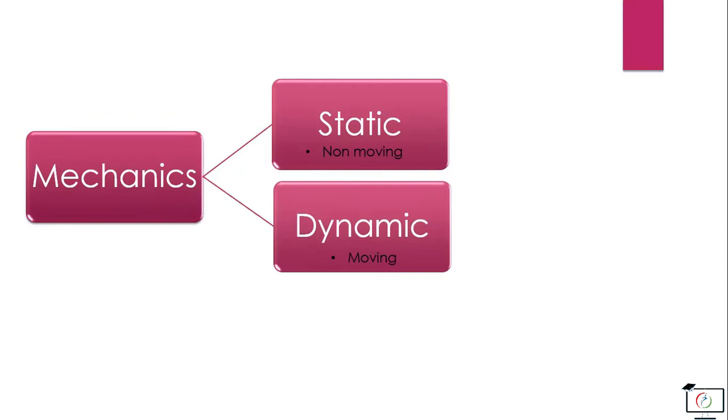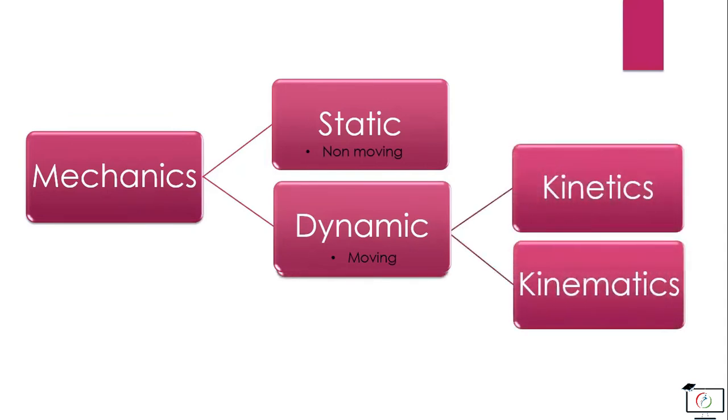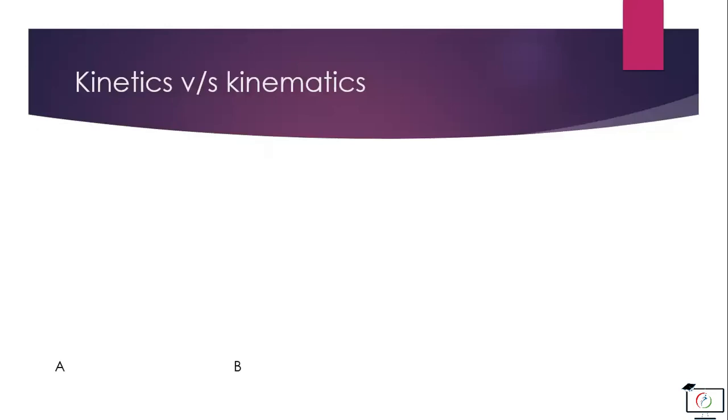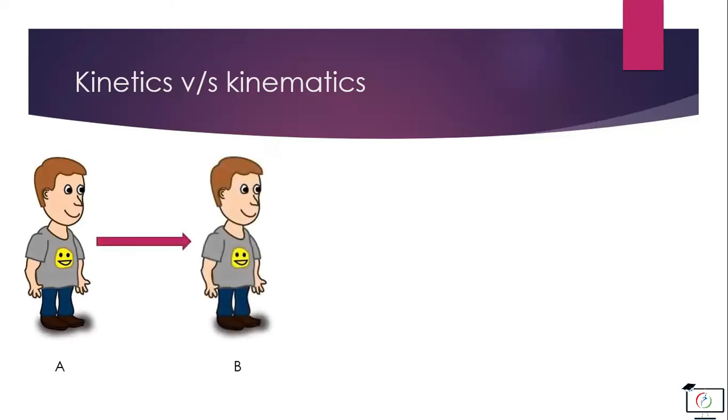The dynamic system further consists of kinetics and kinematics. To understand the terms kinetics and kinematics, we will have an example here. If a person is standing at place A and moves to place B.